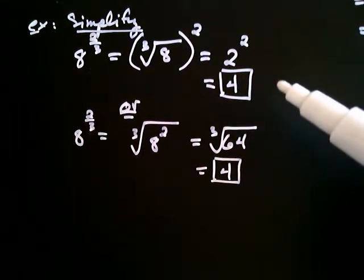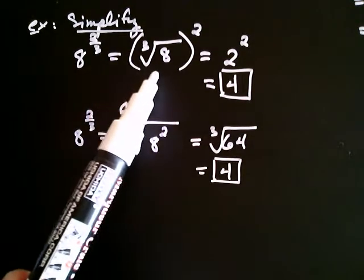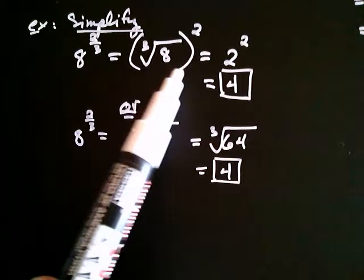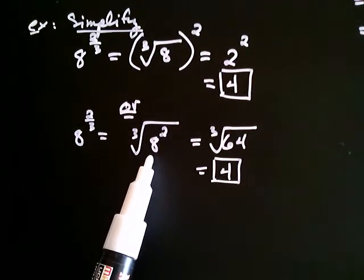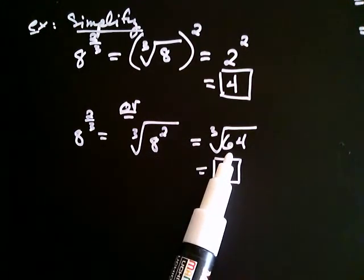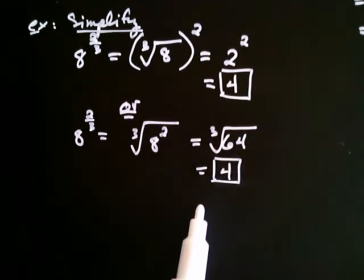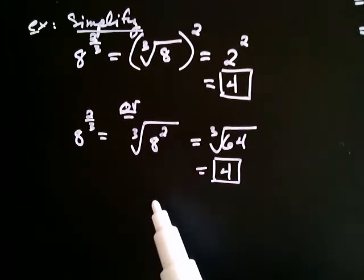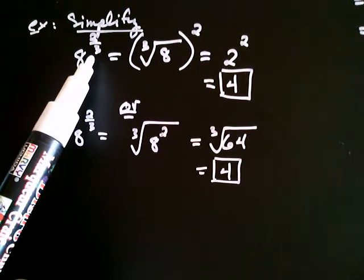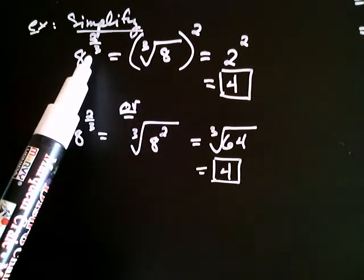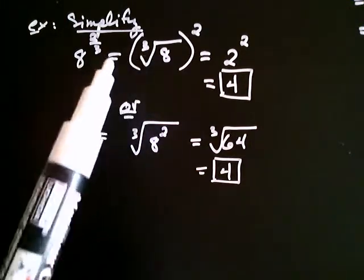Which way was better? I think the first way was better, because I only had to take the cube root of 8 — that's pretty small and easy. But look at the second approach: because we first squared 8, that gave us 64. The cube root of 64 isn't terribly hard, but we had to think a little more because 64 was a larger number. So generally speaking, with rational exponents we often take care of the denominator first — we first take care of roots, and then take care of powers.